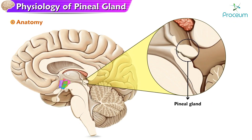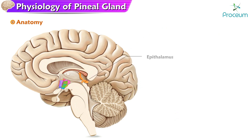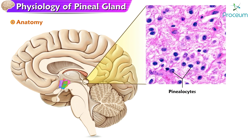The pineal gland is a small, reddish-gray gland, approximately 8 mm long and 5–7 mm wide. It is located in the epithalamus, a region of the brain that connects the thalamus and the midbrain. The pineal gland is surrounded by a capsule of connective tissue and contains many pinealocytes, which are specialized cells that produce and secrete melatonin.